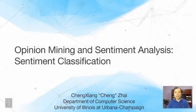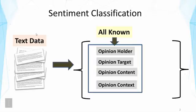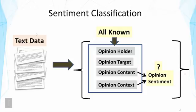This lecture is about sentiment classification. If we assume that most of the elements in the opinion representation are already known, then our only task may be just sentiment classification. Suppose we know who is the opinion holder, what the opinion target is, and also know the content and context of the opinion. Then we mainly need to decide the opinion sentiment of the review. This is a case of using sentiment classification for understanding opinion.